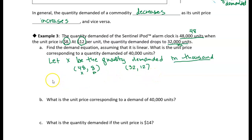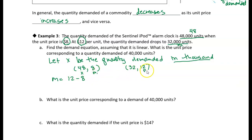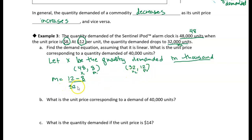To write the equation for a line, we need the slope. The slope is the difference in P over the difference in x. Taking P2 minus P1: 12 minus 8 = 4. Taking x2 minus x1: 32 minus 48 = negative 16. So the slope is 4 over negative 16, which equals negative one-fourth.